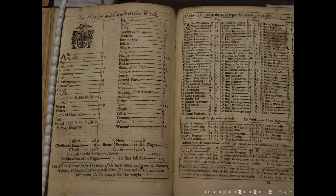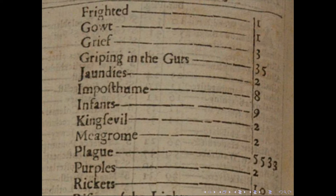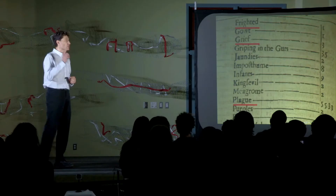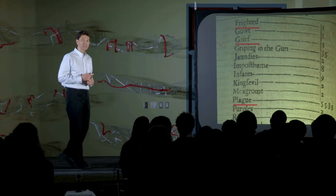Here is one bill of mortality from a particular week in 1665. If I zoom in on the left-hand page, there are some interesting things: the causes of death are listed alphabetically — somebody died of being frighted to death, three people died of grief, a bunch of people died from griping in the guts, and there are various other interesting things. But most impressively, in this one week there were more than 5,000 people who died from plague. This was in the middle of the great plague of London.